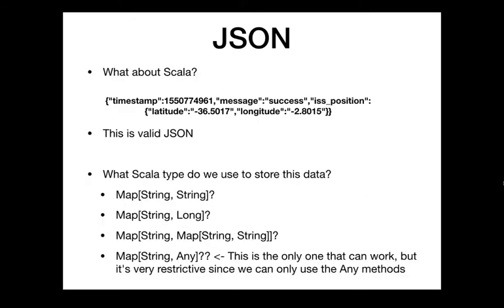So if we want to parse this JSON in Scala, what type do we get? We have an object as our top-level type, so a Scala map makes sense. Keys in JSON are always strings. But the values are mixed: we'd need a Long for the timestamp, a String for message, and another Map of String to String for the position. We can't use a single simple type for the values, so we could use Map[String, Any] since everything in Scala is of type Any.